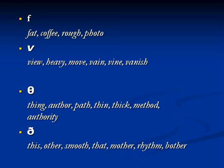The next pair is θ and ð. We do not have an equivalent in Malayalam, but in Arabic we have similar sounds. They are pronounced by putting your tongue outside. θ as in sing, author, path, thick, method, authority. ð as in this, other, smooth, mother, rhythm, bother.